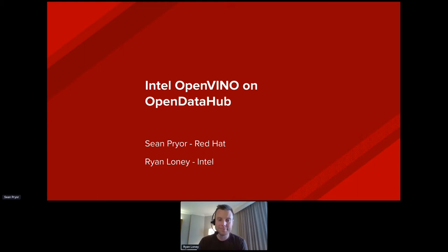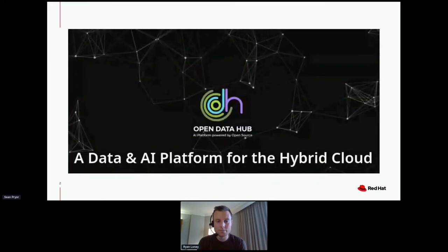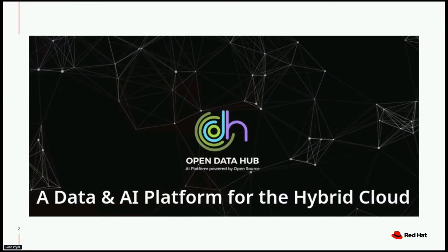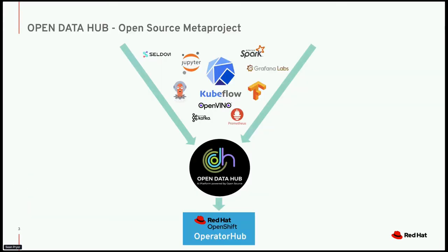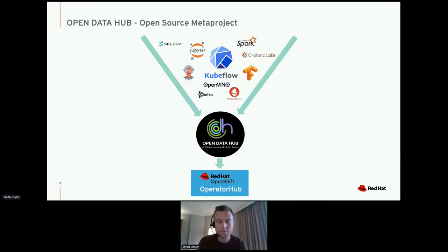Hello everyone. I'm Sean Pryor as mentioned. This is Ryan Looney. We are here to present on Intel OpenVINO on Open Data Hub. To get started, I'll be talking a little bit about Open Data Hub, a data and AI platform for the hybrid cloud. Open Data Hub is a big meta project that aims to bring together a lot of the tools that one would need to do all this kind of data science. We have Seldon for model serving and Kubeflow as the main backend component, and we have OpenVINO as part of enhancing training and inference on Intel-based CPUs.